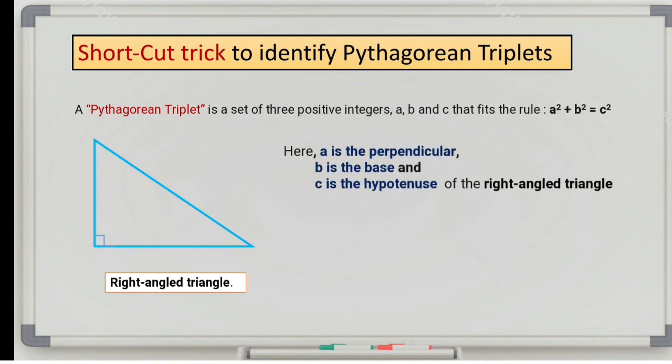Here A is the perpendicular, B is the base and C is the hypotenuse of the right angle triangle. The general formula for Pythagorean triplet can be shown as A square plus B square is equal to C square.